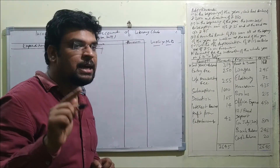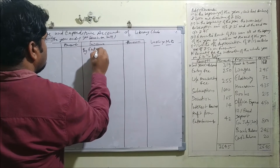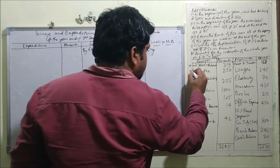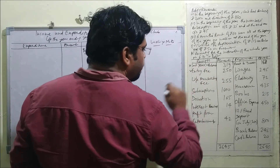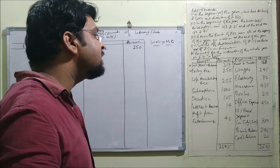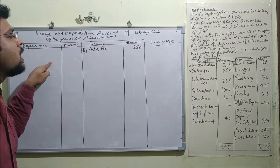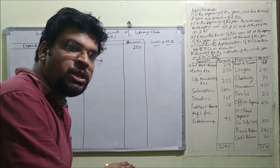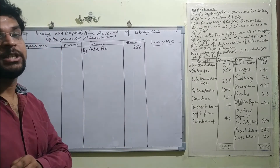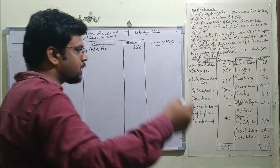The last year's balance means cash balance, which is an asset and goes to the balance sheet — it is not needed in the income and expenditure account. Entry fee is a revenue receipt, so we mention it here: ₹250. Life membership fee is a capital receipt, and since the income and expenditure account only includes revenue receipts and revenue expenditure, life membership fee goes to the liability side of the balance sheet.